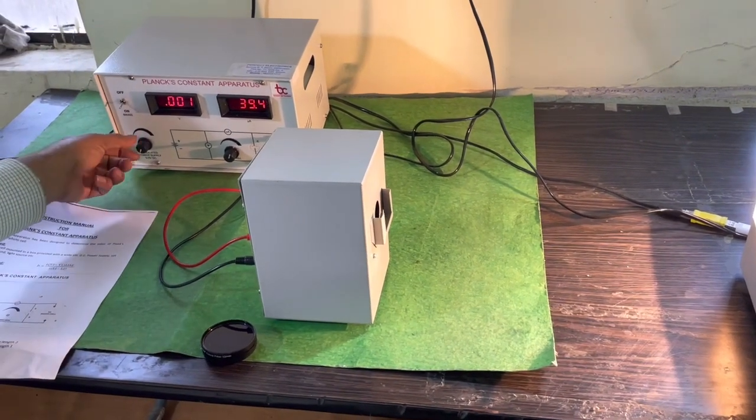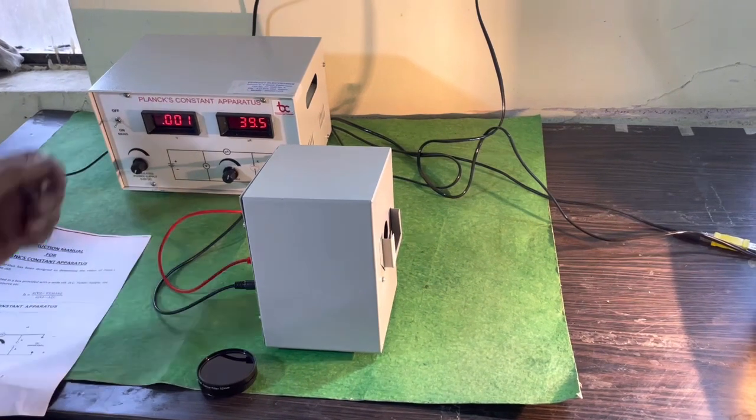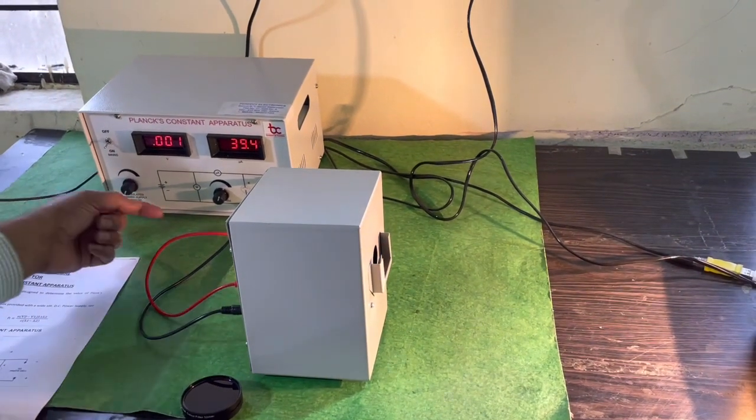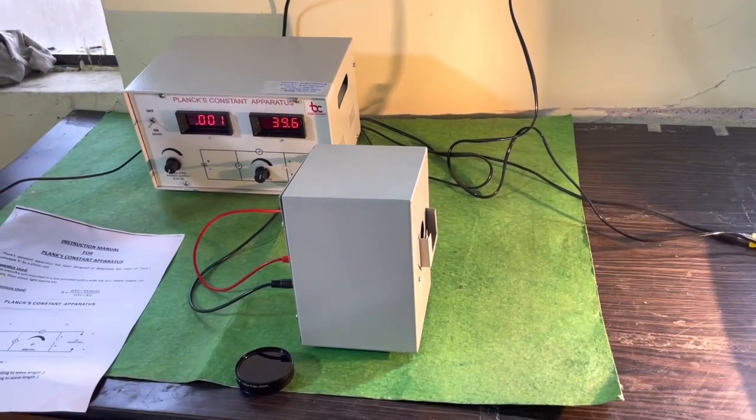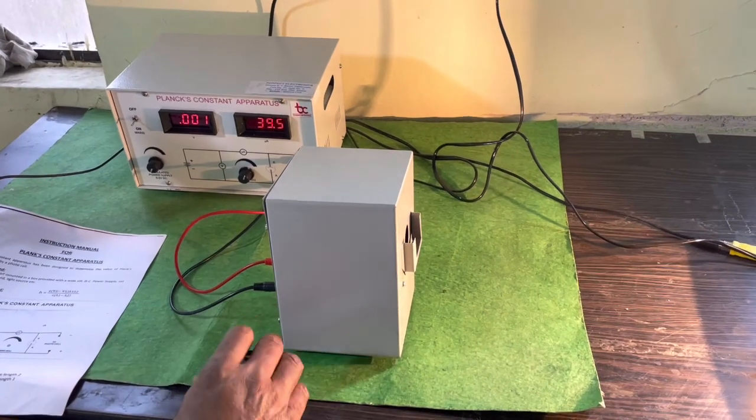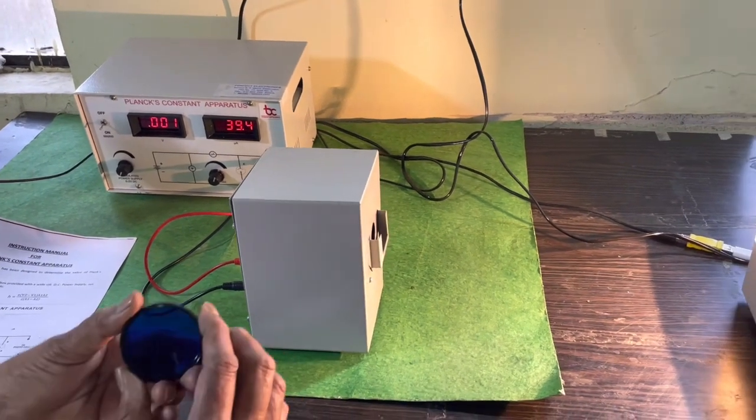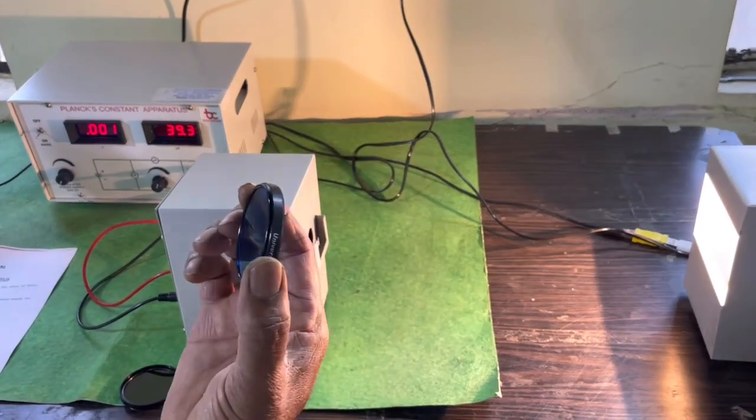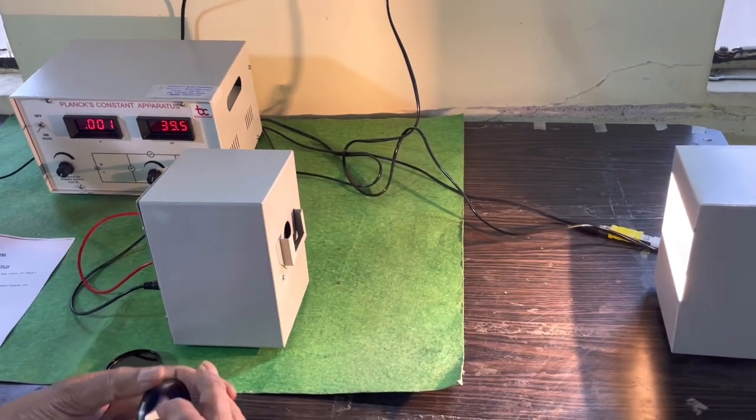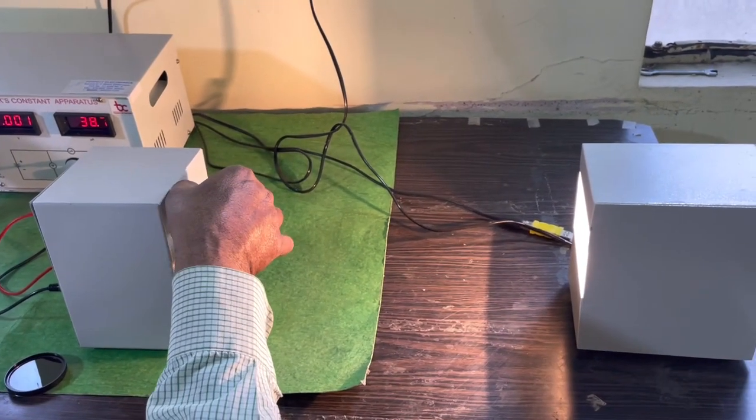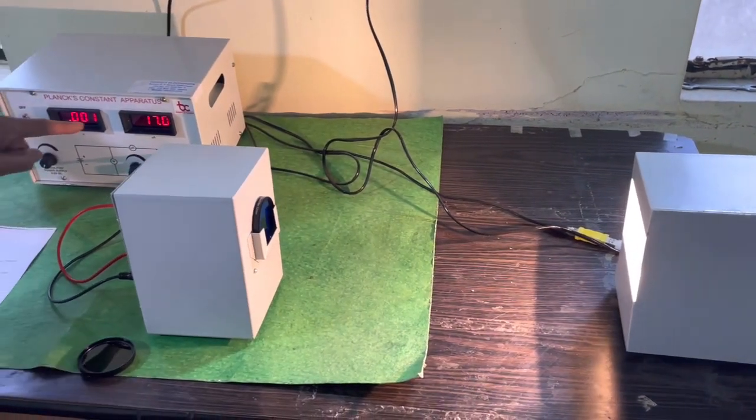In this case, this voltage source is kept at zero and proper sensitivity control is kept here. We shall find out the stopping potential for the blue color. If the blue color filter is used here, the current is decreased.